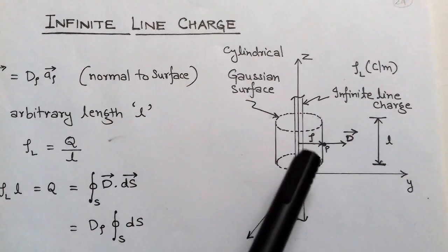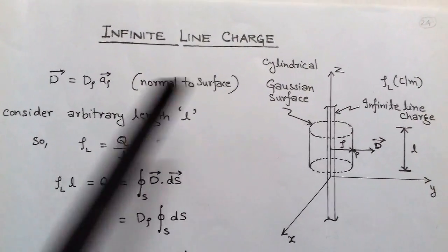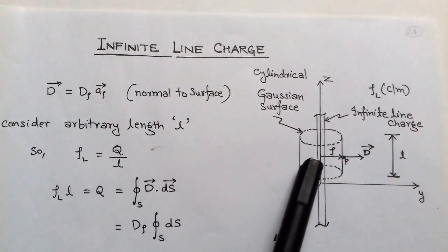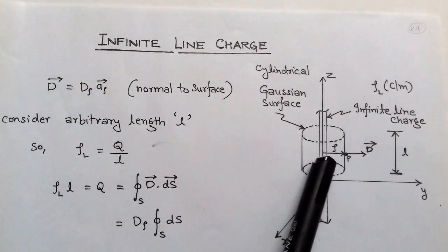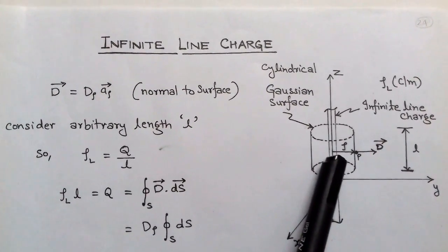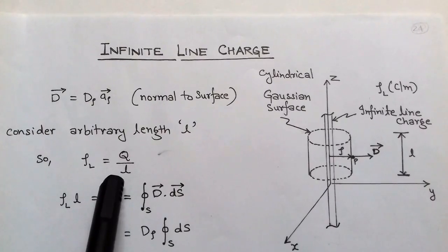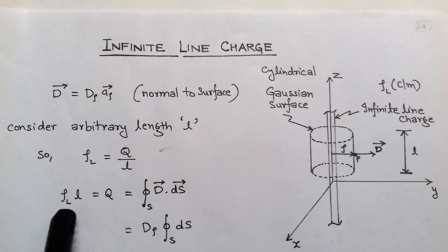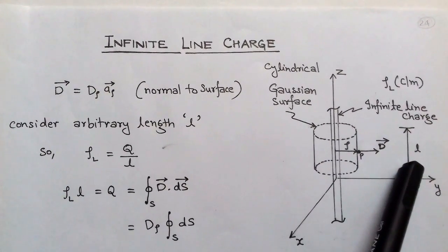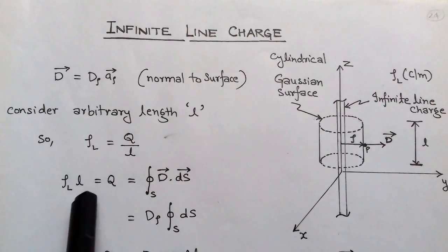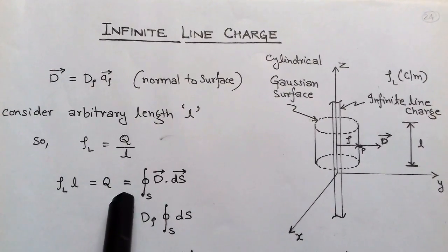At point P, the electric flux density D equals D_ρ â_ρ, because D has a normal direction in the same direction as unit vector â_ρ. The line charge density ρl equals Q/l, so ρl × l equals Q, where l is the arbitrary assumed length of the Gaussian surface.